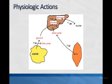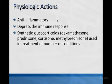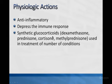Glucocorticoids also have very well-documented effects on other things in the body. They are very important anti-inflammatory agents — many people have gotten topical creams from the pharmacy for skin rashes that were synthetic glucocorticoids. They also depress the immune system, so they're used in transplant patients to help prevent rejection, and in people with rheumatoid arthritis and asthma. Some names of synthetic glucocorticoids you may have heard: dexamethasone, prednisone, cortisone, and methylprednisolone.